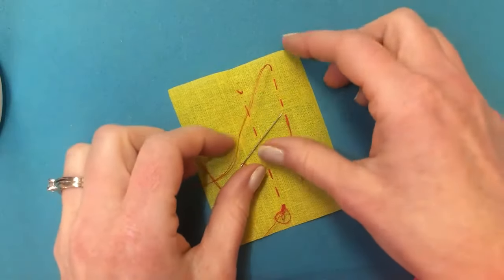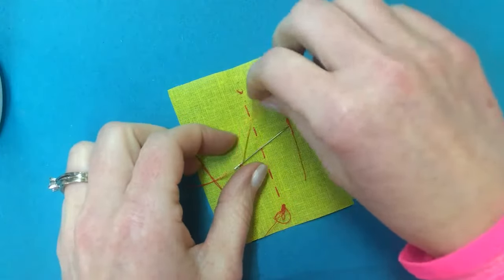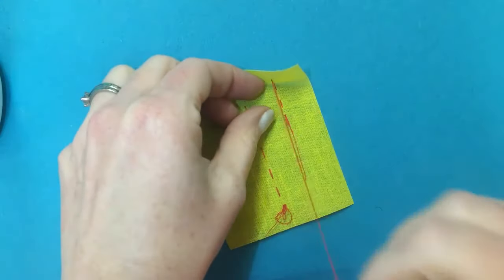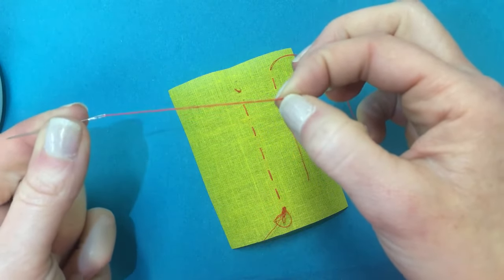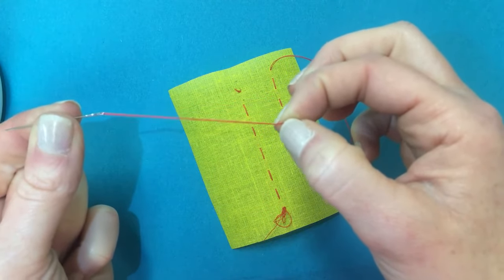What we need to do is tie off our thread at the end of a seam. You'll do this when you're finished sewing or if you have this much thread left and you'll need to continue but you don't have enough to complete the job.